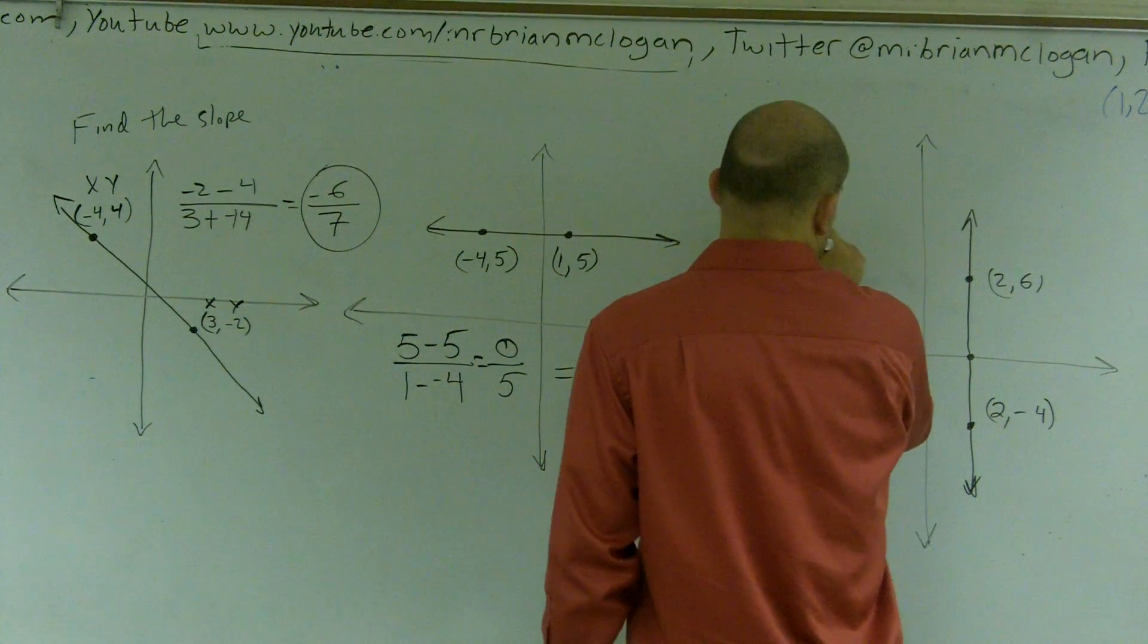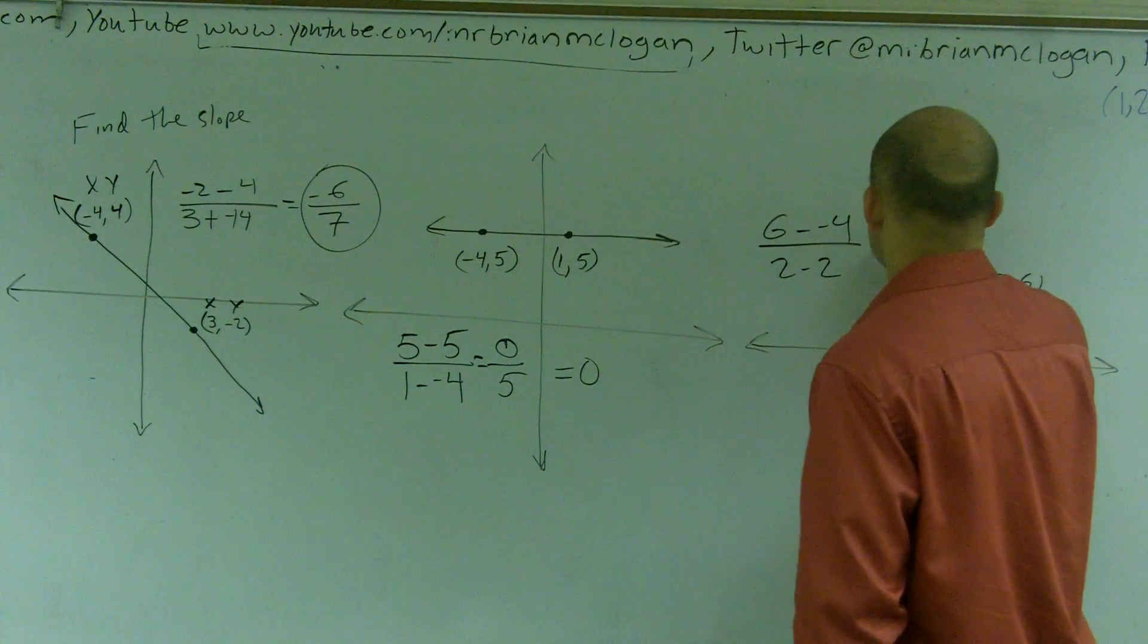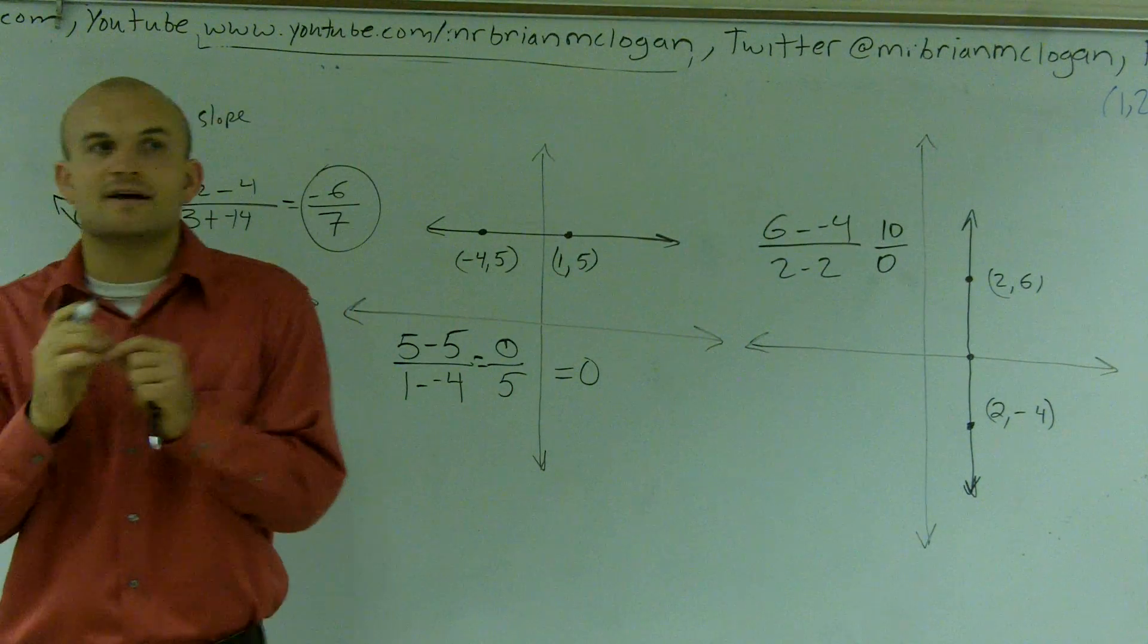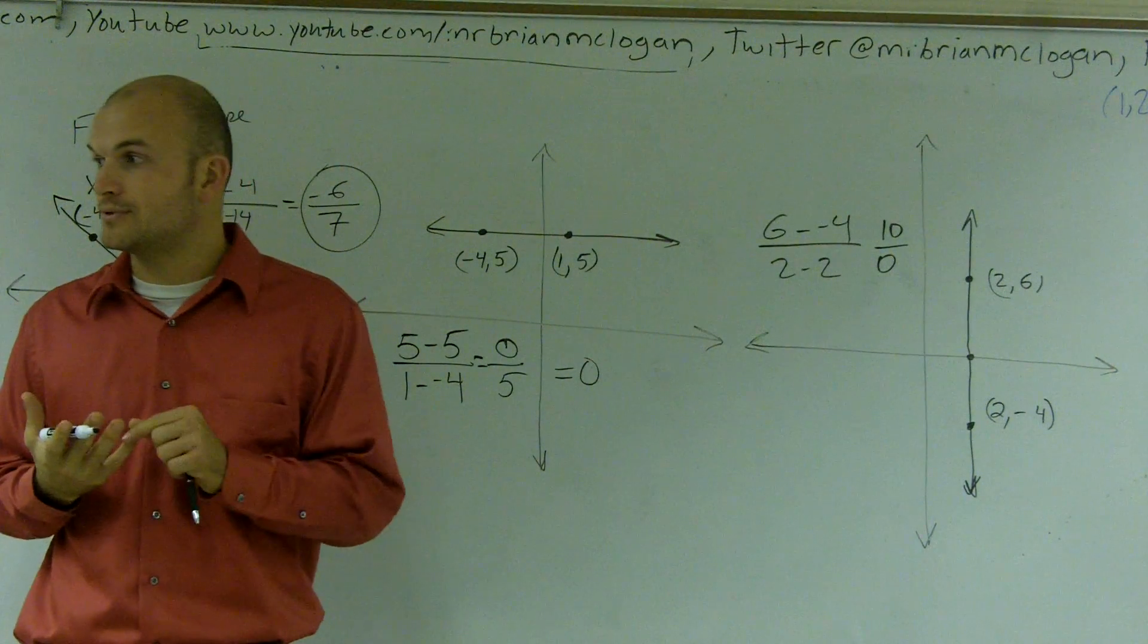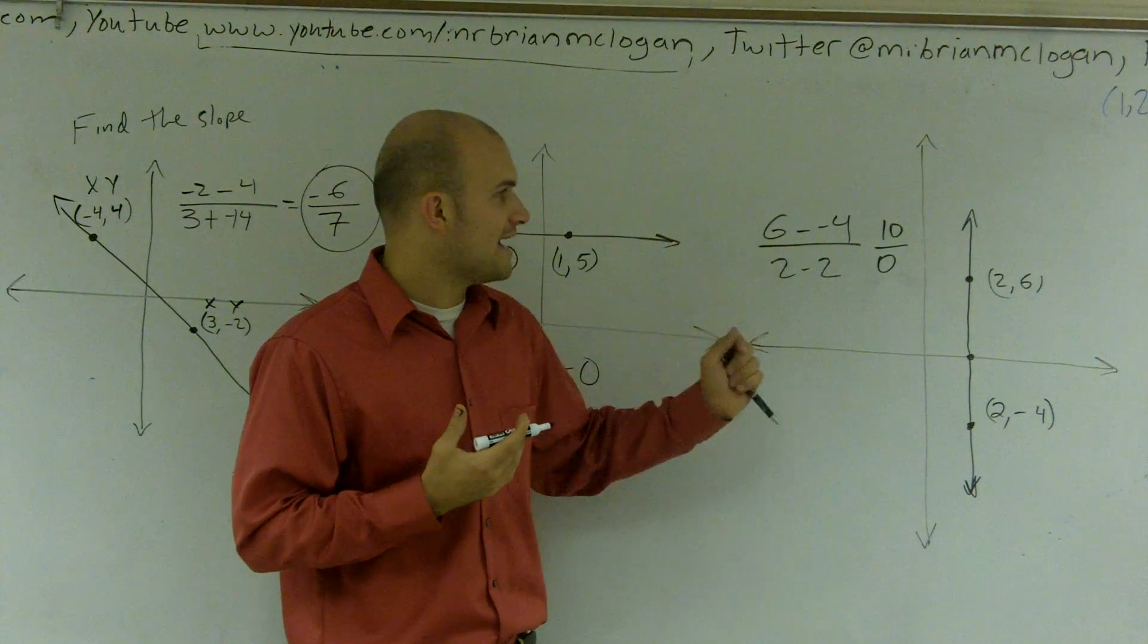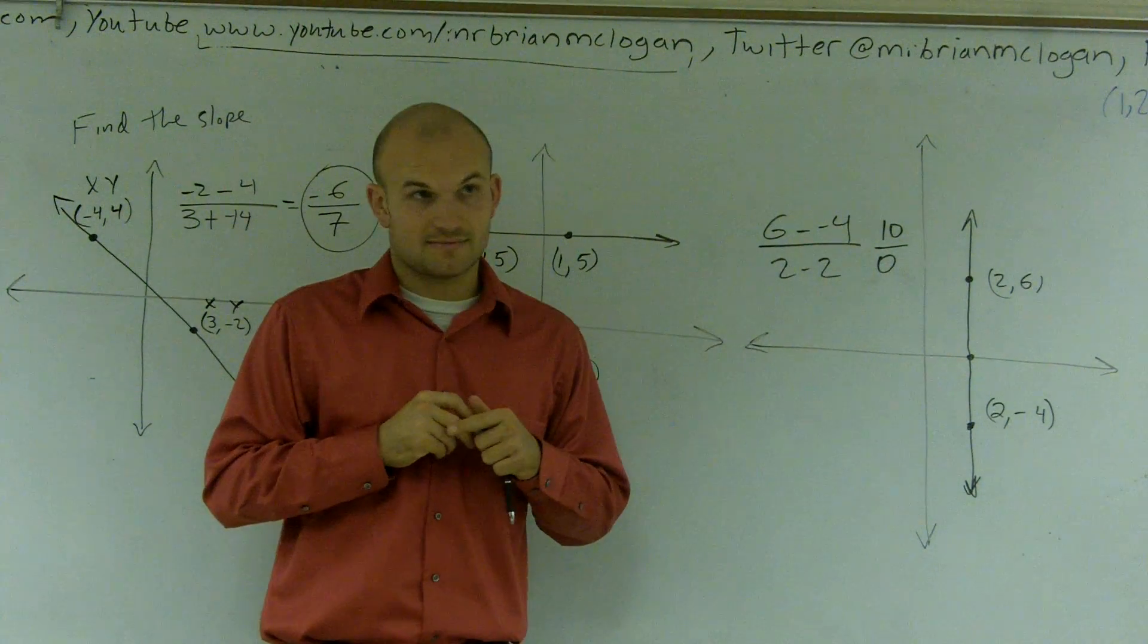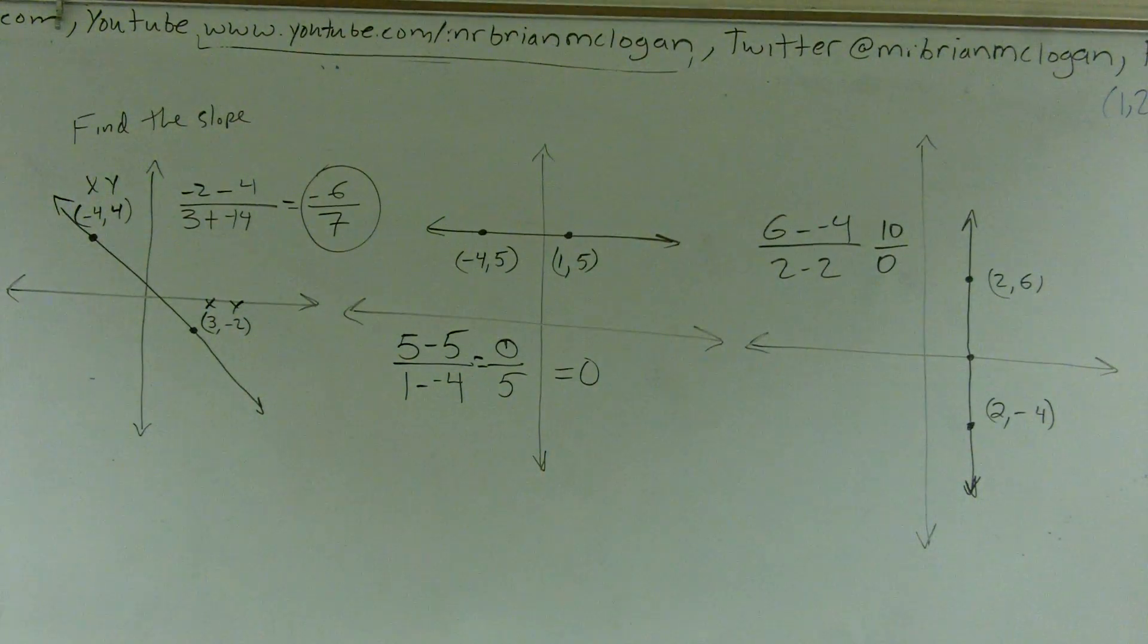Last one. 6 minus negative 4 over 2 minus 2. Now I have 10 divided by 0. This is very important for you guys to understand: whenever you have a number divided by 0, you actually have an undefined slope. So we don't have an answer. Our answer is going to be undefined. So the slope of this line is undefined. There is actually not a value for the slope. Does that make sense? Yes. Go. Thank you so much.